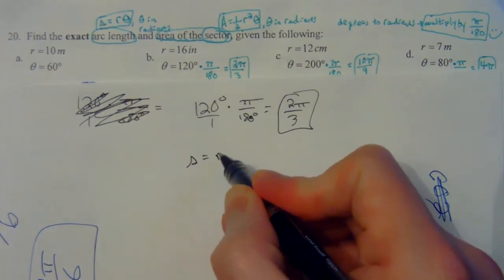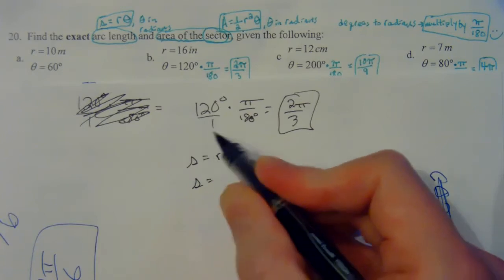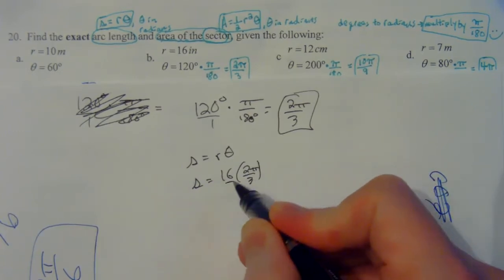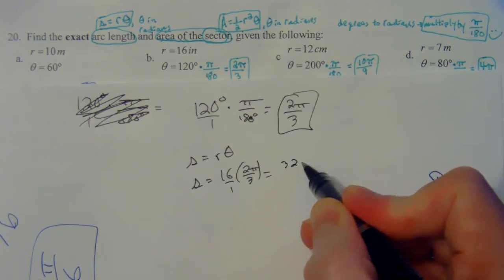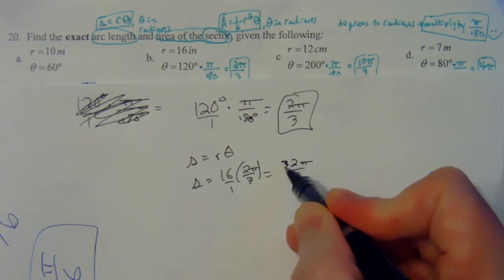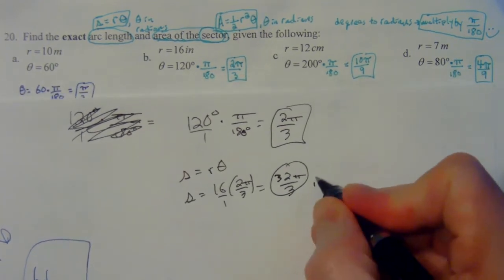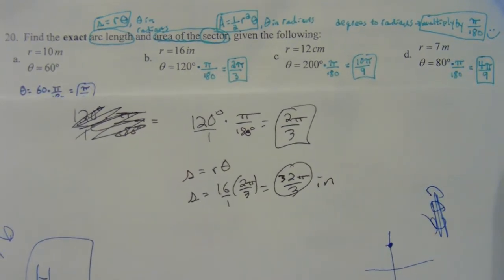that's just r times theta. So that radius is 16, and I'll times it by the two pi over three. That's 16 over one, so this will give us 32 pi over three. So there is our arc length, and it's mentioned inches there. That's just the length of the circular arc.